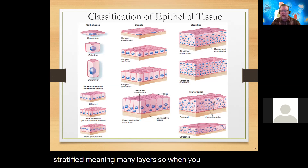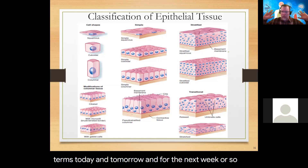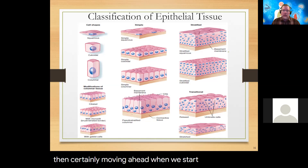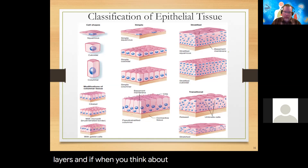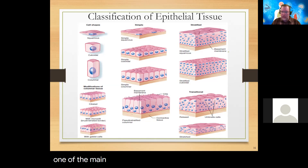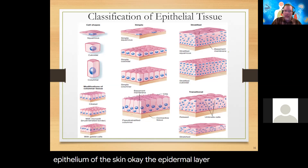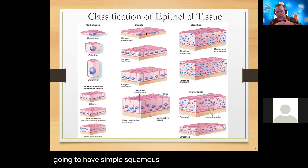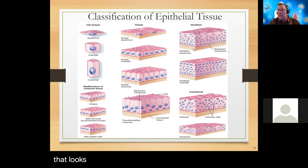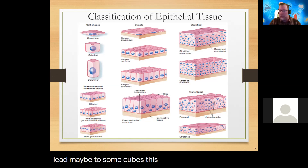When you see these terms, just break it down: is it one layer or many layers? Consider what the function of the organ is. When we look at skin, one of the main functions is protection. So with the epithelium of the skin, we wouldn't want just one thin layer of flat cells — we'd want many layers of flat cells leading to some cubes. That would provide more protection, so we'd see a stratified situation. Simple squamous might be found where we need gas exchange — like in the alveoli of the lungs — while stratified squamous would be seen with the skin or epidermis.